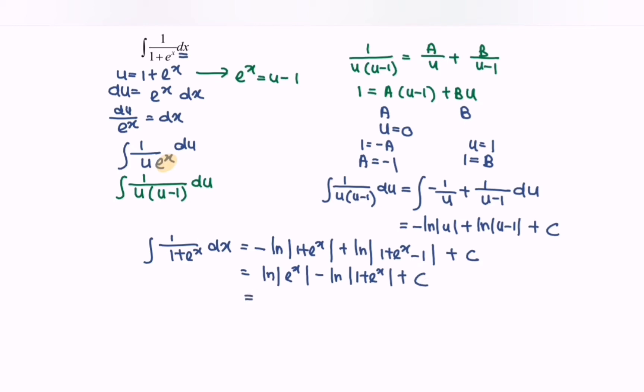If we simplify, we will have ln, and because of the logarithm properties, we will have e to the x over 1 plus e to the x plus C.